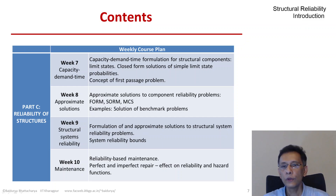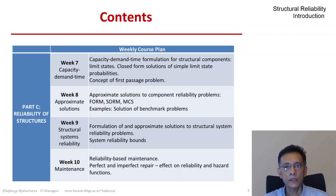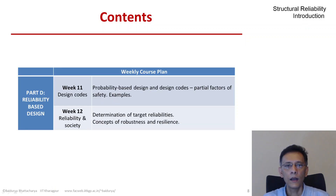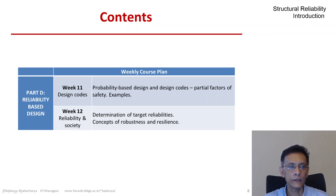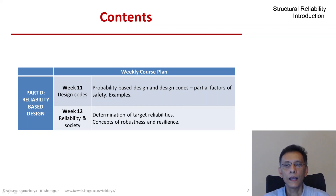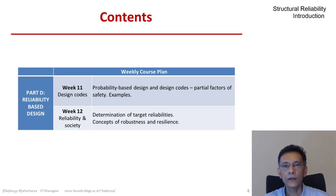In week nine we will look at structural systems reliability, and we will end Part C with reliability-based maintenance. In Part D we will first look at how probability-based design codes are developed, and in the last week we will venture into the interface of structural reliability and society — trying to answer the question of how safe is safe enough, and concepts that are becoming more and more relevant: those of robustness and resilience.